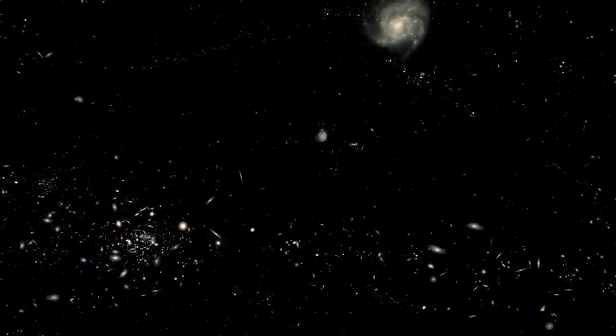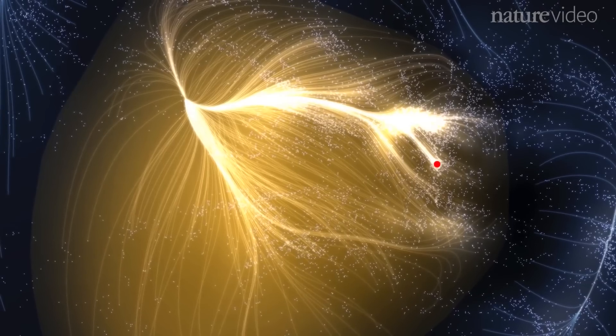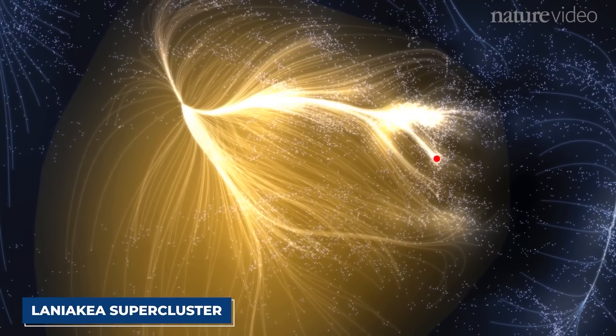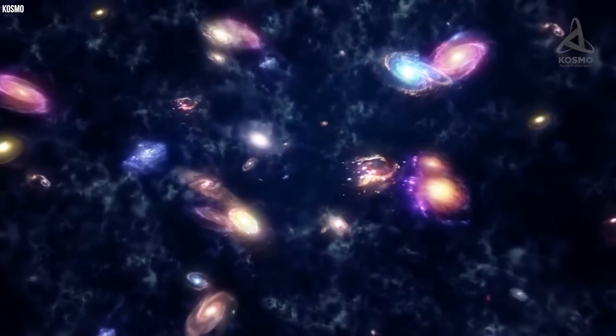Our galaxy is part of the local group of galaxies that form a part of Virgo supercluster. This cluster itself is a constituent of the Laniakea supercluster. The Milky Way also has several satellite galaxies, according to experts.